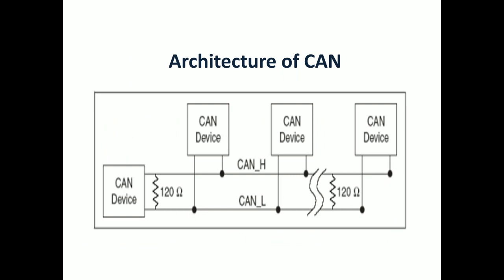The main advantage of 120 ohm resistor is to avoid signal replication. This is asynchronous communication, and we'll discuss that later. As of now, just understand the architecture of CAN.